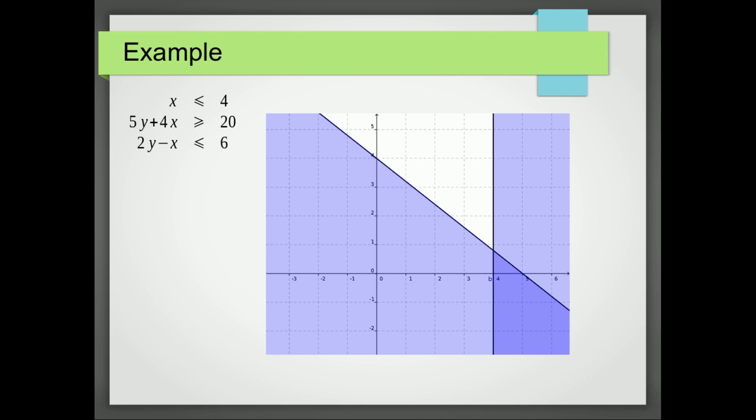I'm now going to draw the line 2y minus x equals 6. I'm going to pick a point not on the line. And 0, 0 is an option. So I end up with 0 is less than 6. Is that true? Yes, it is. So below the line is true. Above the line is false. And there's the solution to my problem.